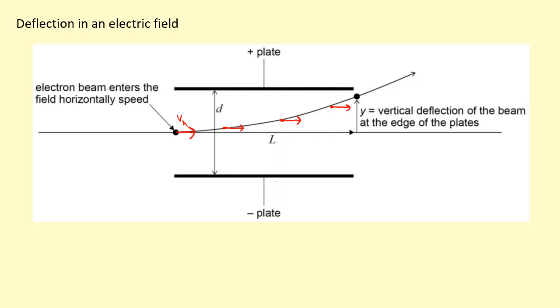However, its vertical velocity—initially it wasn't moving vertically at all—and then it starts to accelerate upwards, so it starts to get faster and faster in the upward direction. And then eventually it will leave at this point here, so it's been deflected vertically by a distance or displacement of y while it was traveling a length between the two plates. The length was capital L.